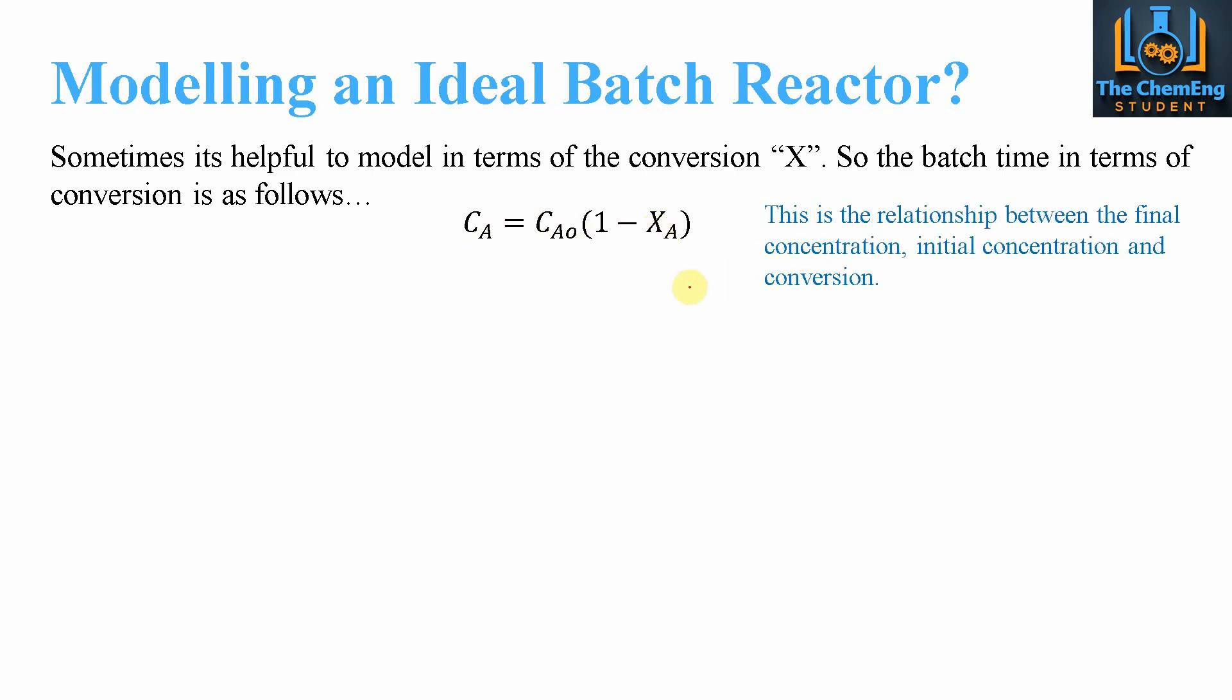If we replace Ca with conversion terms, instead of having dt, we'll have dxA. So dC/dxA equals -Ca0.